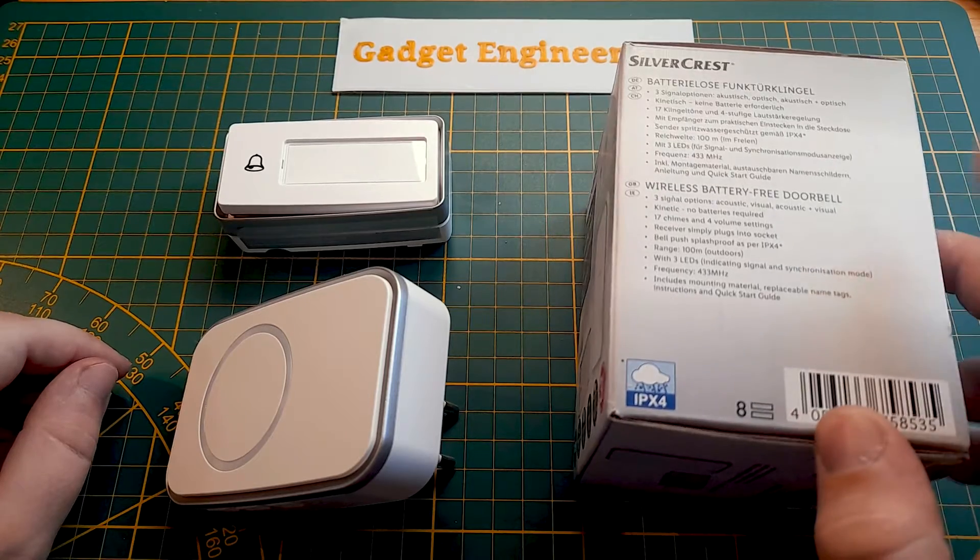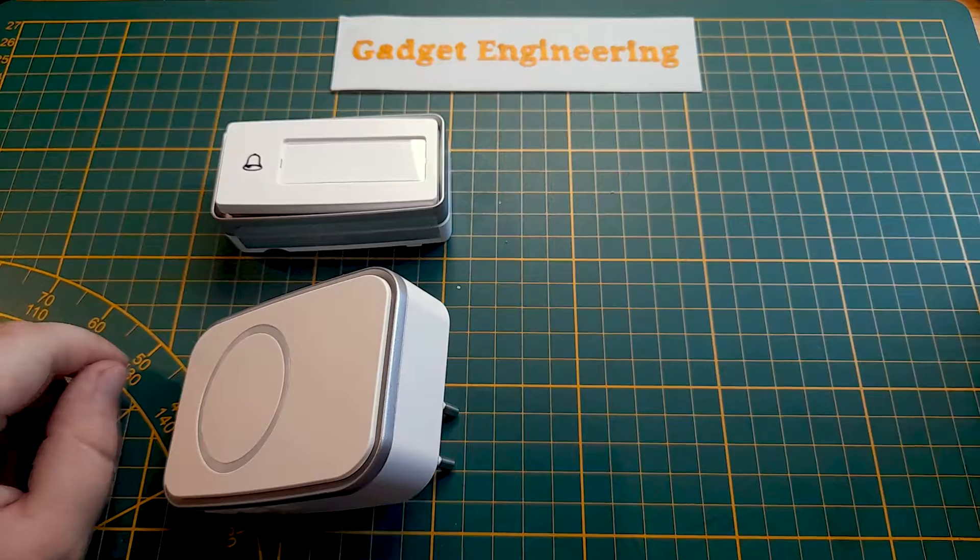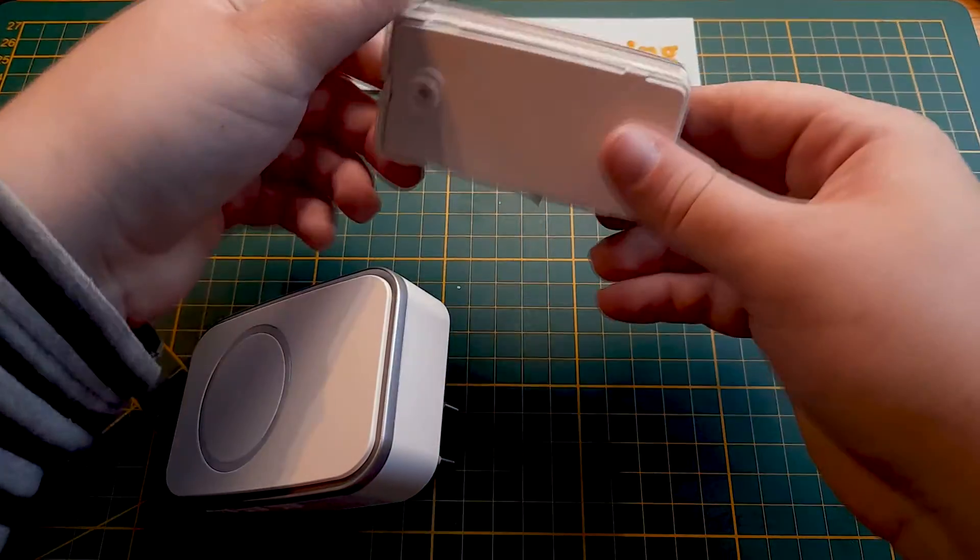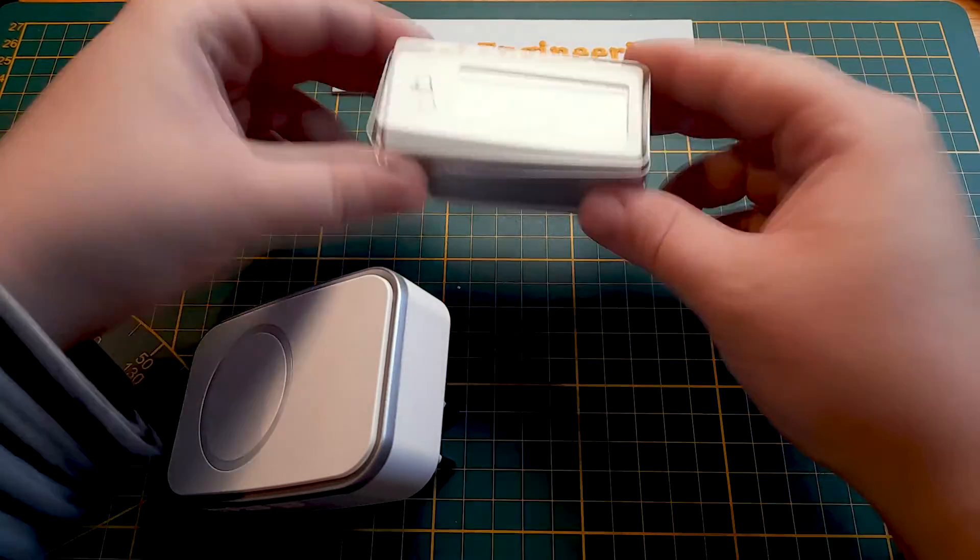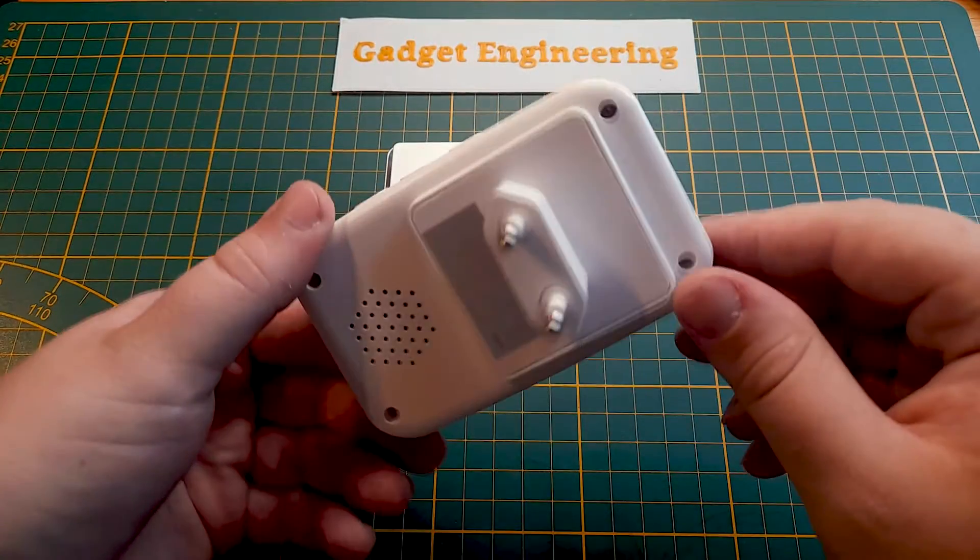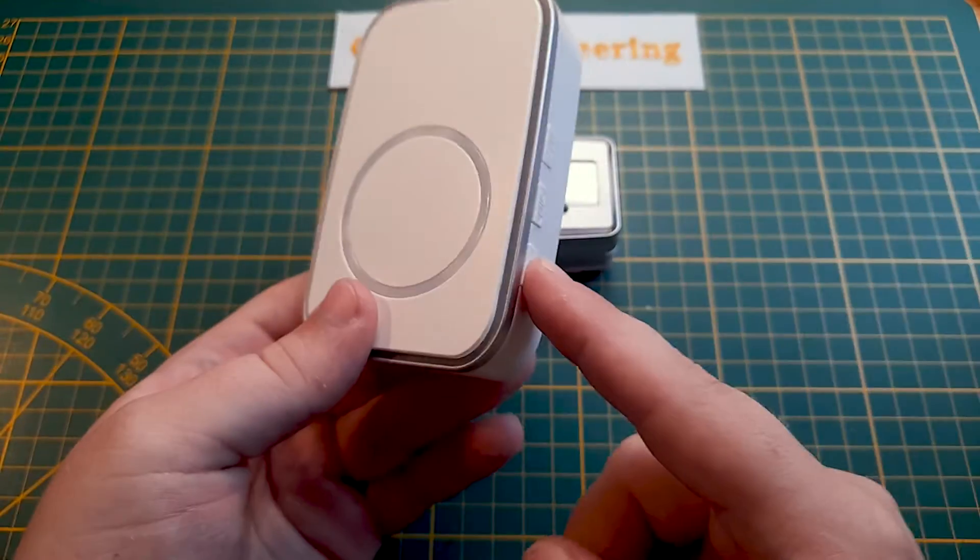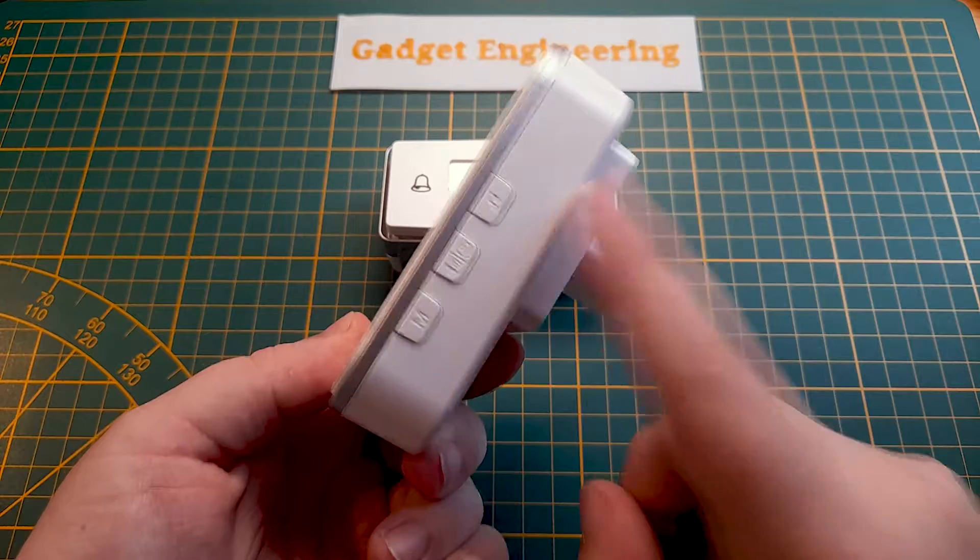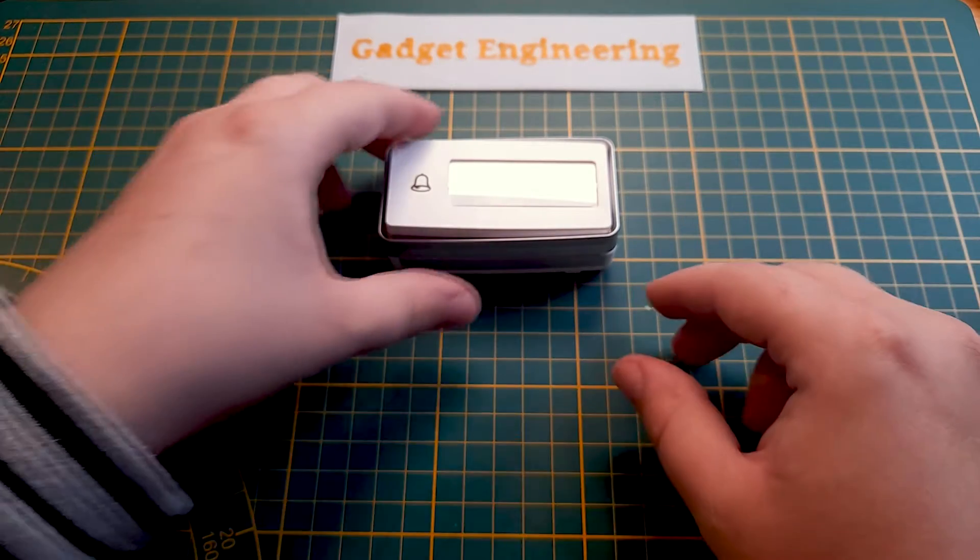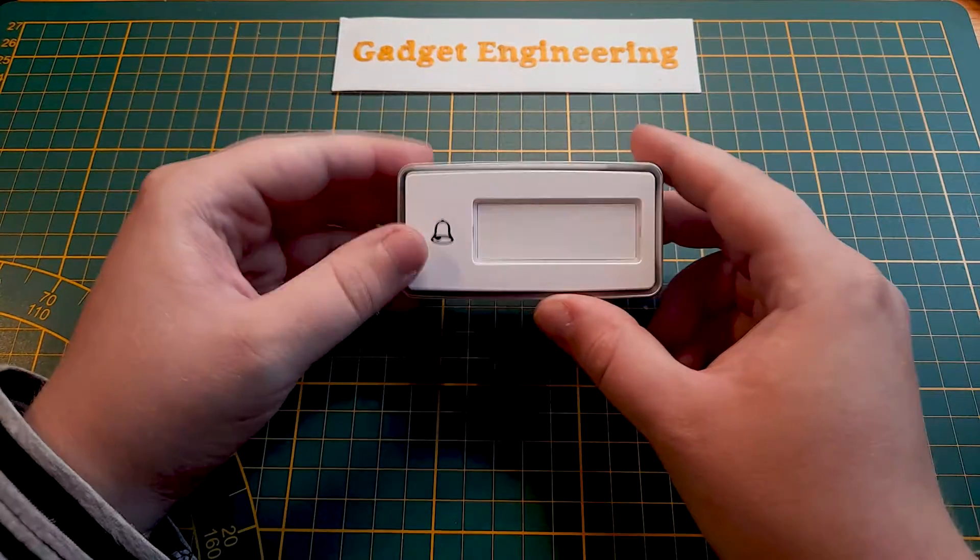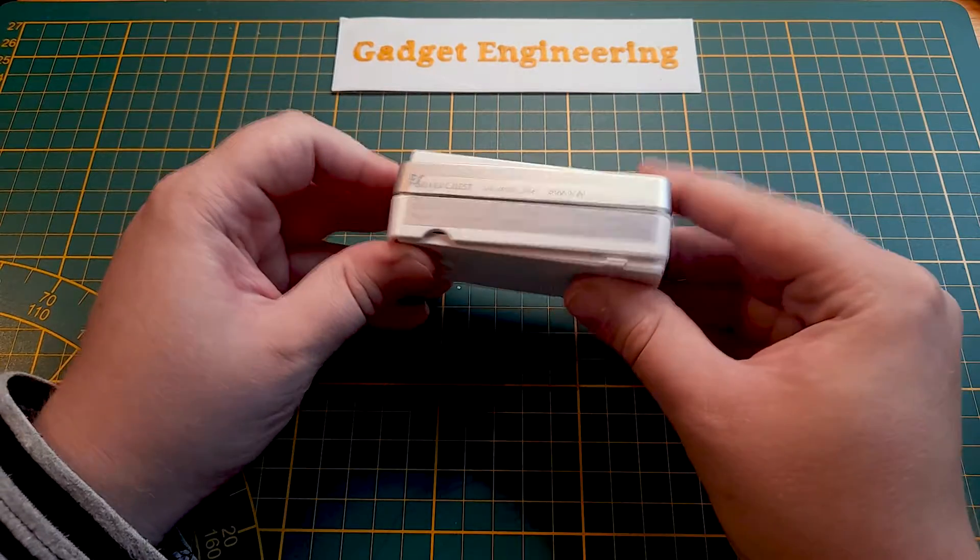So as we can see here, no batteries required, kinetic. That is referring to the outdoor bell unit itself, which is this button tool here. And then we have the plug-in speaker and receiver here that chimes and flashes when the bell is activated. So this whole system is working on 433 MHz as a sort of standard for house weather stations and short-range instruments.